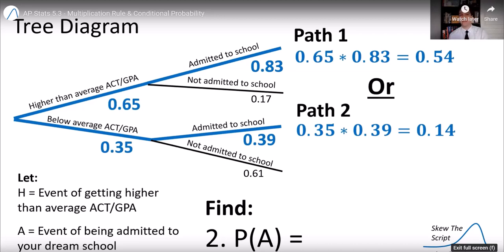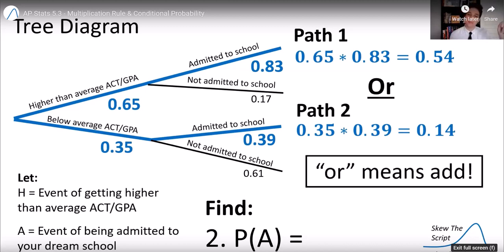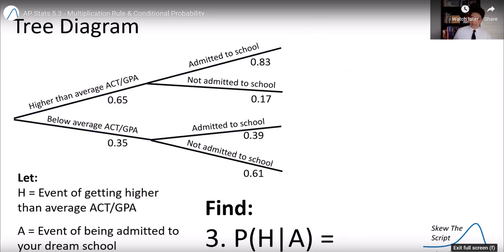And to find the probability of that path, below average AND admitted, remember AND means multiply, we multiply along the path. So these two paths have two different probabilities, but they're both included in the event of being admitted to the school. So it's either OR. You could go down path 1 or path 2. Remember, OR means add. That's what we learned in the last lesson. So we simply just add those paths together and the overall probability of being admitted to your dream school was 68%.